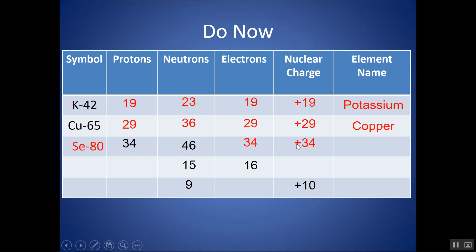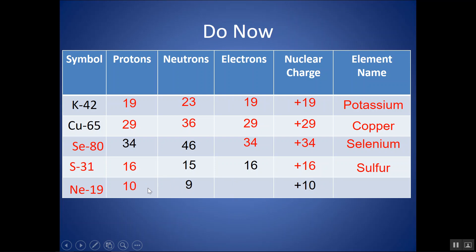Here I give the number of electrons instead of protons. In a neutral atom they're equal, so it's 16 protons — identifying sulfur. Adding 16 protons and 15 neutrons gives mass number 31. Nuclear charge is 16, and this is sulfur. In the last example, the nuclear charge is given as 10, so there must be 10 protons — that's neon. With 9 neutrons, mass number is 10 plus 9 equals 19. Again, this is not a number you look up — it comes from adding protons and neutrons. Electrons are 10, and this is neon.